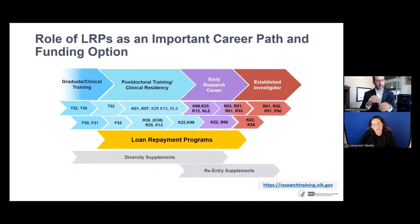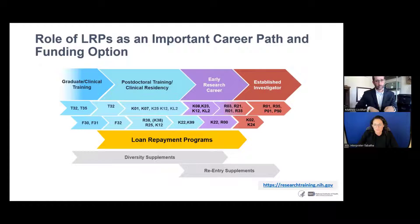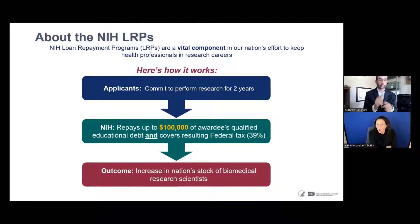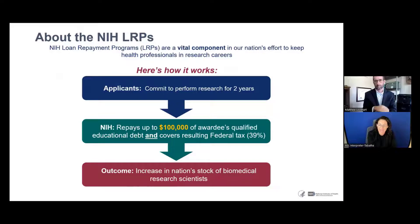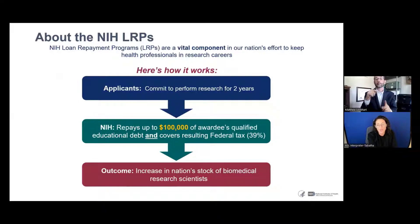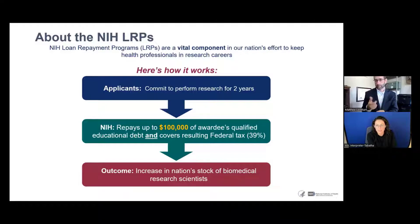You just have to be able to meet the eligibility criteria, which I will cover in a further slide. Applicants are not required to have an NIH grant to apply for the extramural LRP. All LRP awards are for two years, so you must be committed to having research for those two years. NIH will pay up to $50,000 annually, or $100,000 for two years, and the payments are made on a quarterly basis. LRP itself is considered taxable income, so NIH also makes tax payments to reduce the awardee's tax liability from the LRP award itself.